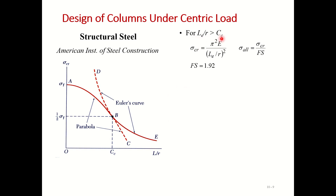The condition is: if L/r is greater than Cc it is a long column; if less than Cc it is a short or intermediate column. For long columns we compute the critical stress and then apply a factor of safety. The American Institute of Steel Construction specifies a factor of safety of 1.92 to obtain the allowable stress for designing steel columns.